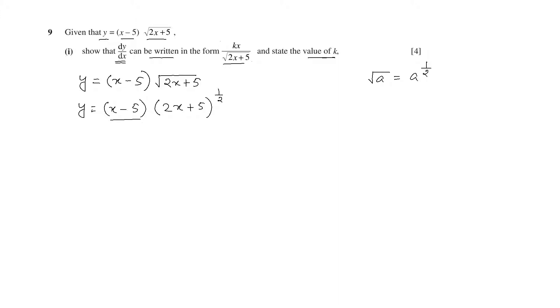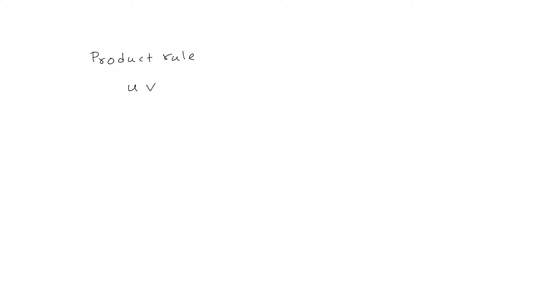If you look closely, x minus 5 and 2x plus 5 whole to the power half are in product form. Therefore we have to use the product rule of differentiation. The product rule states: if we have u multiplied by v, then differentiating gives us u times d over dx of v, plus v times d over dx of u.